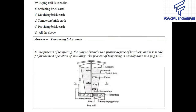Question number 59: A pug mill is used for — softening brick earth, moulding brick earth, tempering brick earth, or preparing brick earth? The right answer is tempering brick earth. In the process of tempering, the clay is brought to a proper degree of hardness and it is made fit for the next operation of moulding. The process of tempering is usually done in a pug mill.